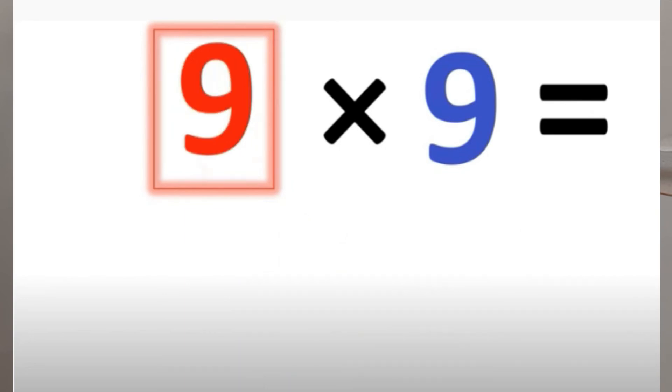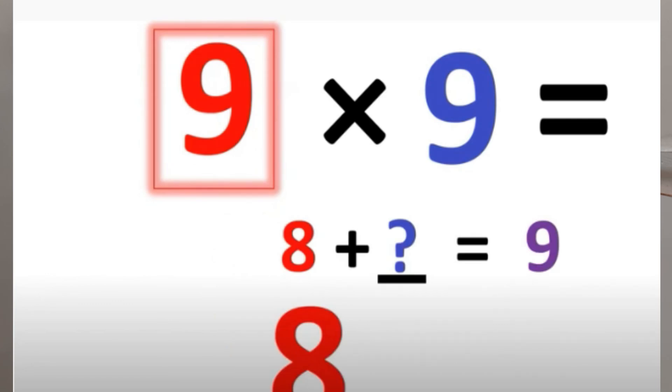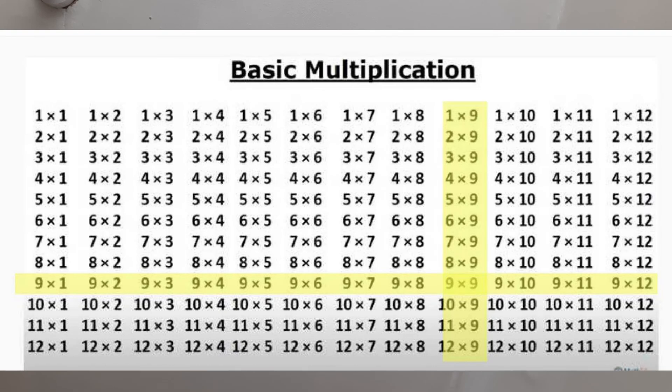You can do that up to 9 times 9. 9 times 9. So, 9 less than 1 is 8. 8 plus what number equals 9? So, the answer is 81. Now, you know the answer to 2 times 9 up to 9 times 9. Also, you know the reverse. 9 times 2, all the way to 9 times 8.